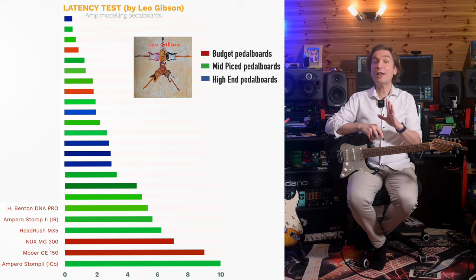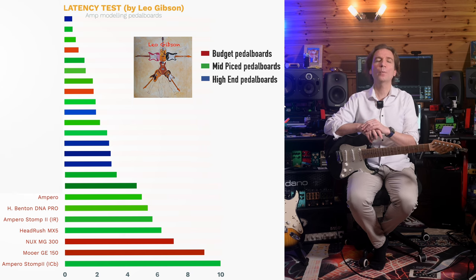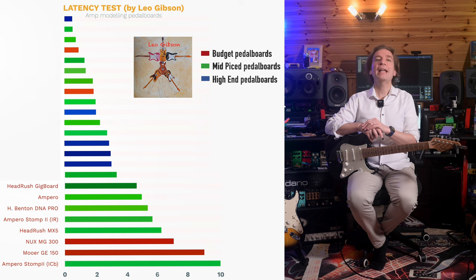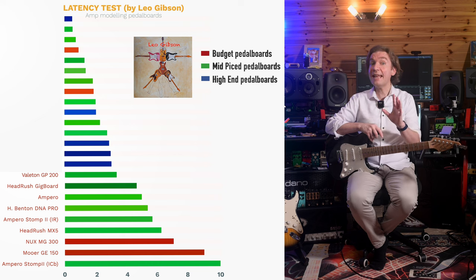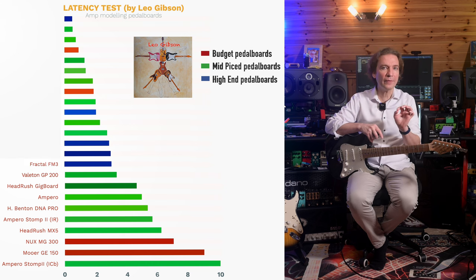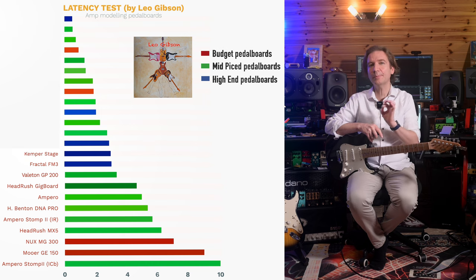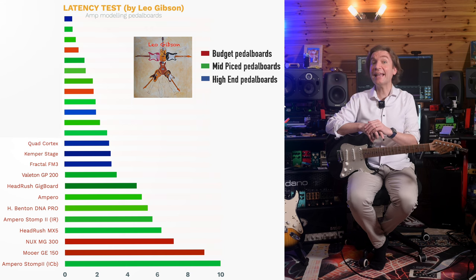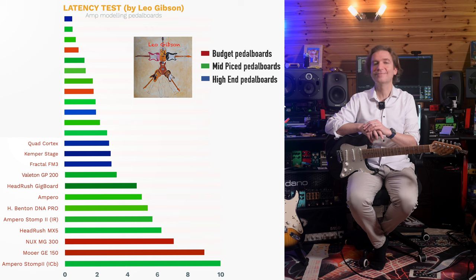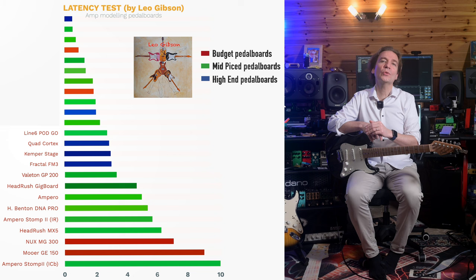With around 5 milliseconds we have the regular Ampero at 4.7 milliseconds, the Headrush Gigboard at around 3.3 milliseconds, the Valeton GP200 at around 3.3 milliseconds, then the Fractal FM3 at 3.2 milliseconds, the Kemper Stage at around 3.1 milliseconds, and the Quad Cortex at 3 milliseconds. So the high-end modelers are pretty close in terms of latency, all at around 3 milliseconds — very interesting.